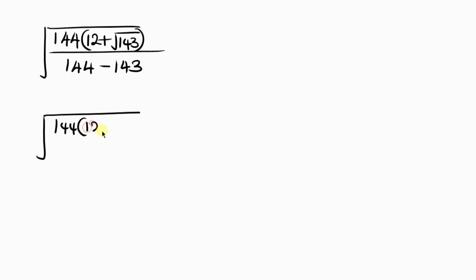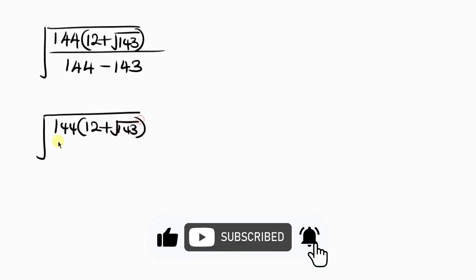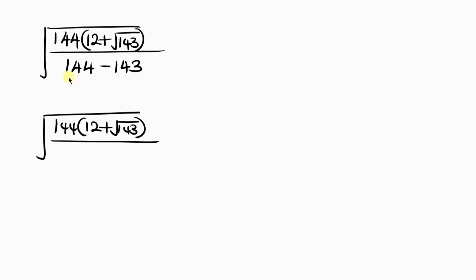So we have the square root of 144 times 12 plus the square root of 143, all over 144 minus 143, which is 1. So 144 times 12 plus the square root of 143, divided by 1, gives the same thing.